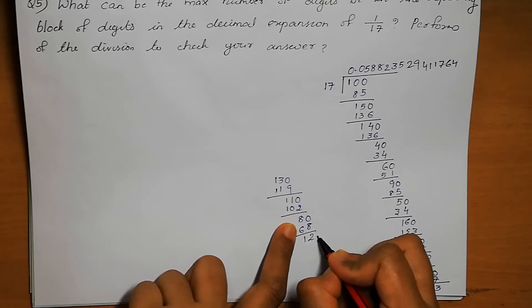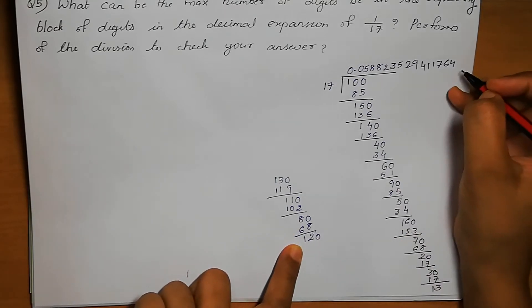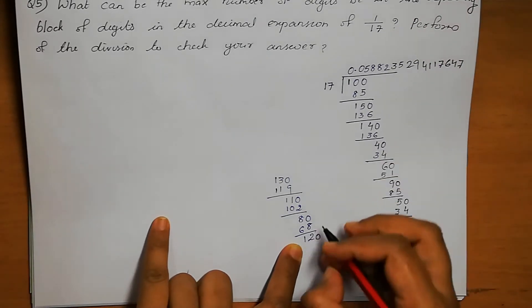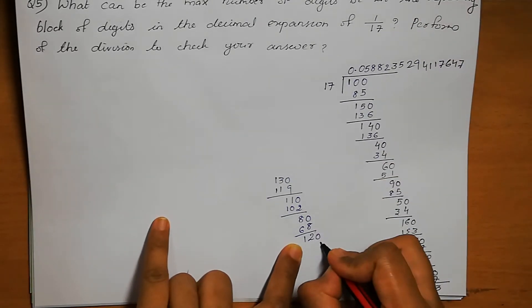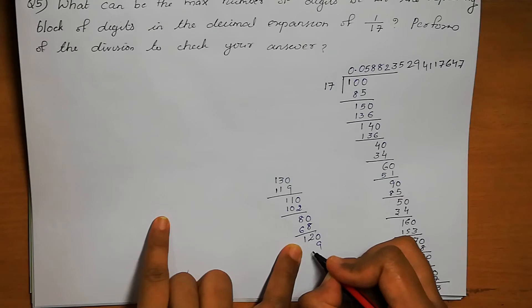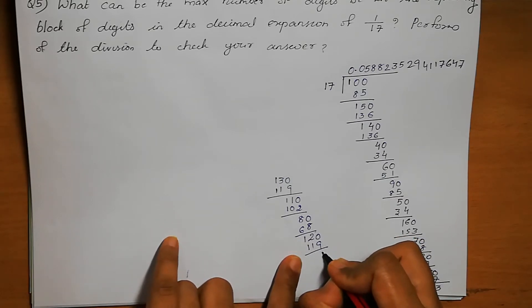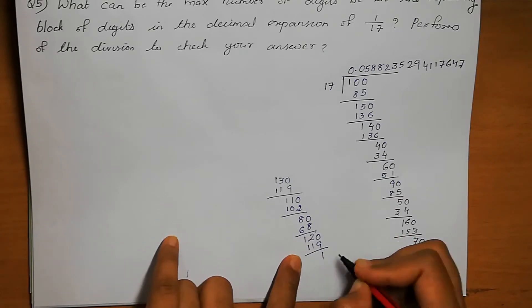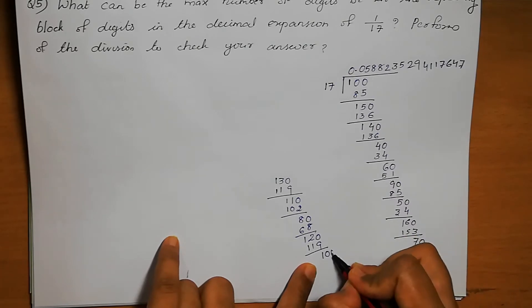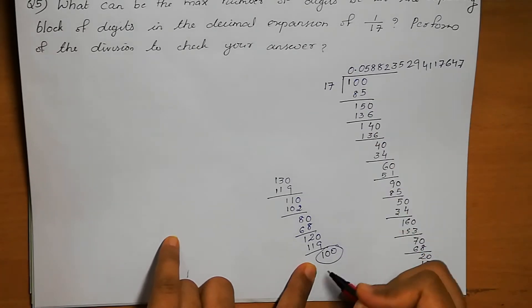2. 120. In 120, how many times? 7 times. 14, remainder 4. 7 plus 4 is 11. 119. Again 1, 1, 0. That means this 100 is repeating — we got remainder 1.